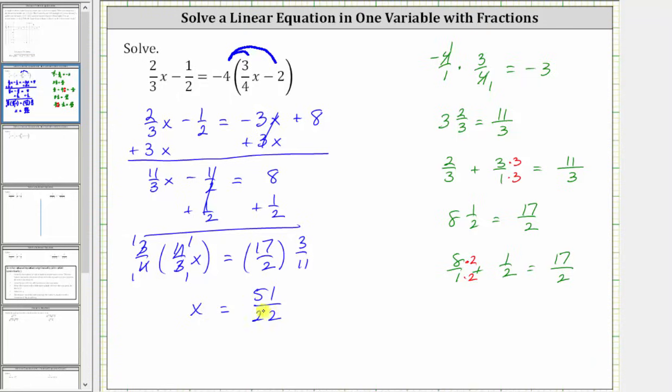This is the solution as an improper fraction. Let's also give it as a mixed number. To find the mixed number, we divide 51 by 22. There are two 22s in 51. 2 times 22 is 44. We subtract. The difference is seven. And therefore, the quotient is two and seven 22nds.